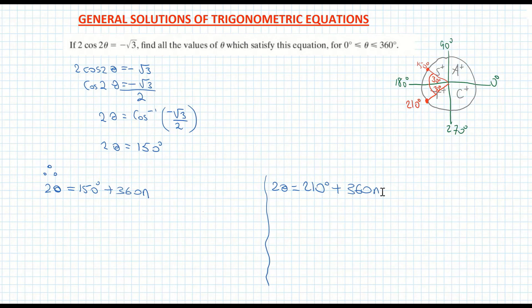So there are my solutions. And now I divide by my two, which is in front of my theta. So therefore theta is equal to 150 degrees plus 360 degrees times n all over my two. And I have theta is equal to 210 plus 360 degrees times n all over two. And when I divide by two,